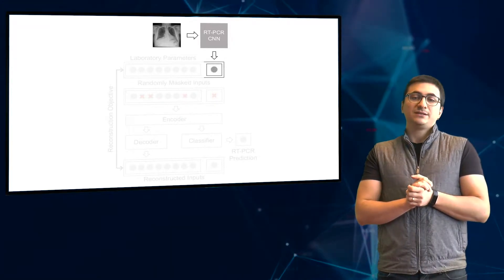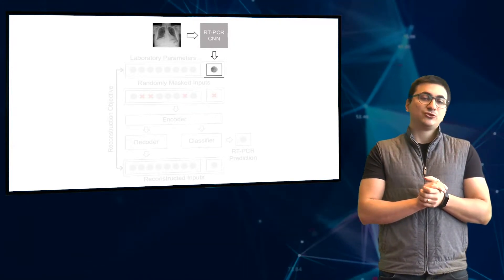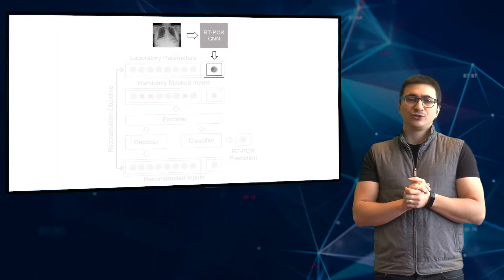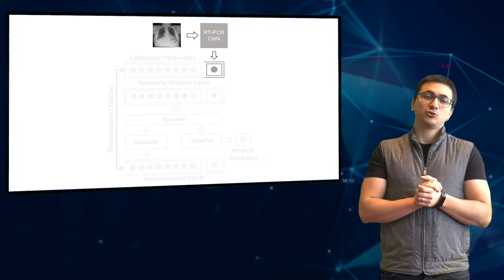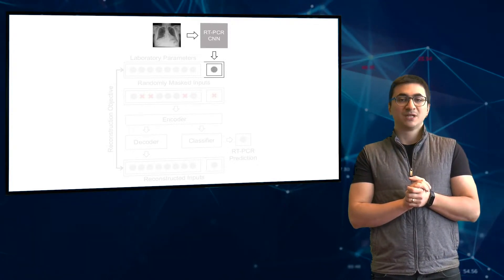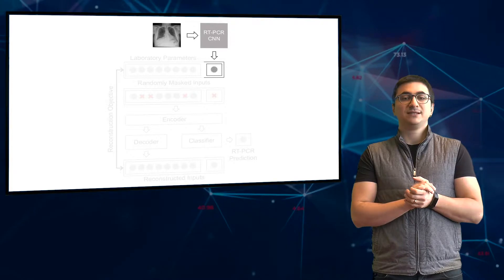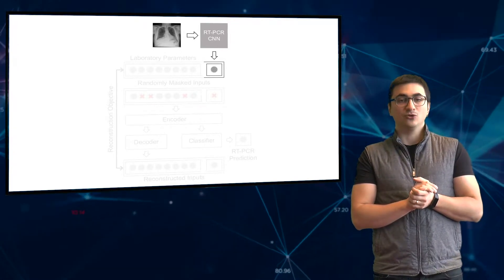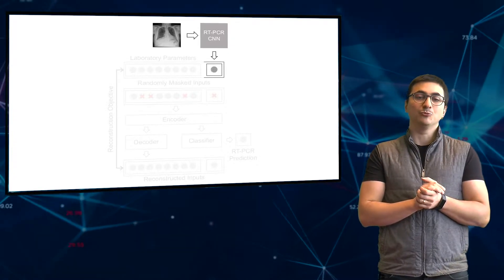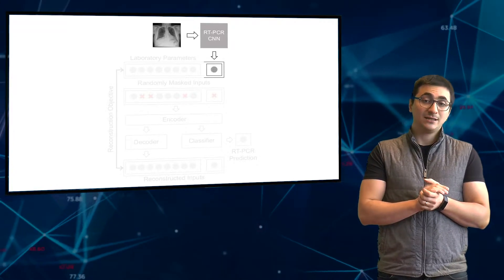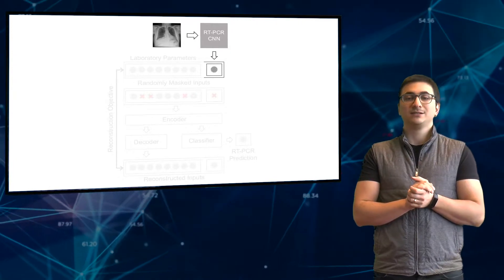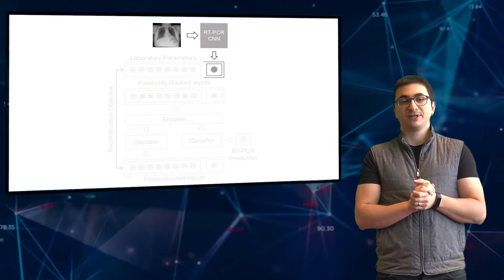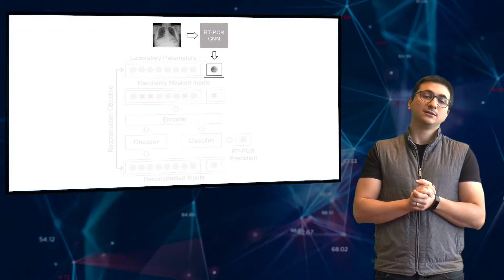This part takes the chest x-ray and inputs it into a convolutional neural network that predicts COVID-19. This is similar to CAP-COVID X-ray, the product that TIRAL develops. I built a system using ResNet-18, pre-trained on ImageNet. First, I retrained this model on the publicly available RSNA pneumonia dataset. Then, I fine-tuned only the last layer of this model using the set of x-rays of COVID-19 suspects from Bernhoven, a hospital in the Netherlands.